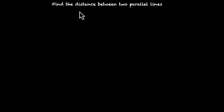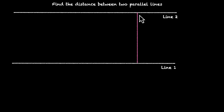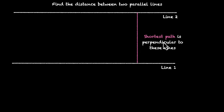In this video, we'll learn how to find the distance between two parallel lines. Let's consider two lines — line 1 and line 2. Both of these lines are on screen and both of them are parallel. We can say that this is the shortest distance between these two. If this is the shortest path, then it has to be perpendicular to both of these lines. We need to find the length of this path.